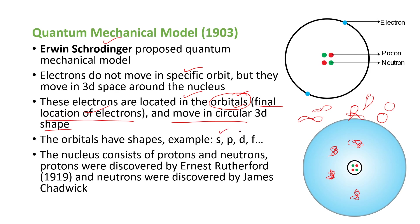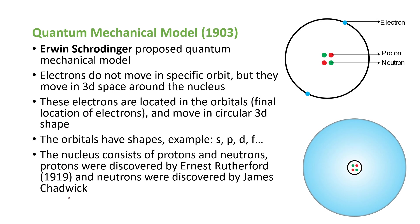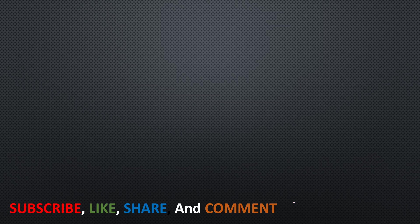The nucleus consists of protons and neutrons. Protons are indicated in red and neutrons in green. The protons were discovered by Ernest Rutherford in the year 1919, and neutrons were discovered by James Chadwick. This concludes our discussion on atomic models. Please subscribe to our channel, click the bell icon, and don't forget to like, share, and comment. We will discuss the next topic in the next lesson.